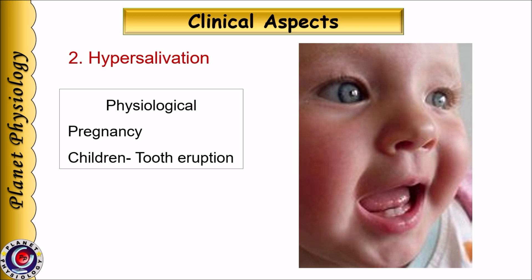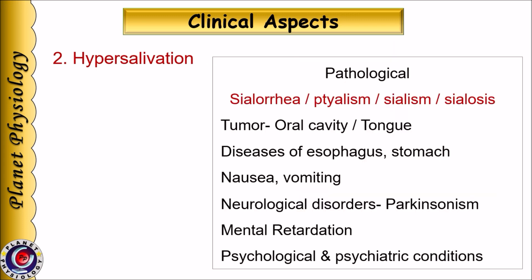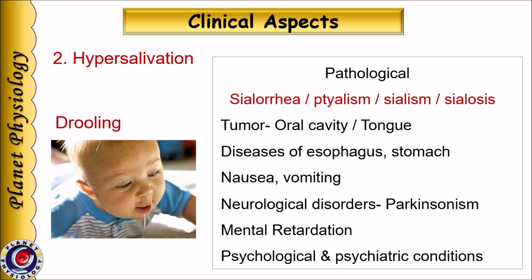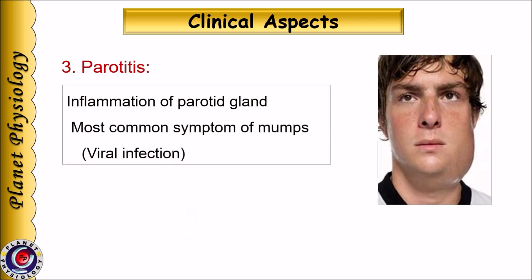The next clinical condition is hypersalivation — excess salivary secretion. Physiologically it is seen during pregnancy and in children during tooth eruption. Pathological hypersalivation is also termed sialorrhea or ptyalism. It occurs in tumours of the oral cavity or tongue, diseases of the esophagus and stomach, nausea, vomiting, neurological diseases like parkinsonism, mental retardation, and various psychological and psychiatric conditions. When this excess salivary secretion leaks from the oral cavity, it is termed drooling. Parotitis is inflammation of the parotid gland and is the most common symptom of mumps, a viral infection. Since the parotid gland is present within a capsule, this condition is very painful.